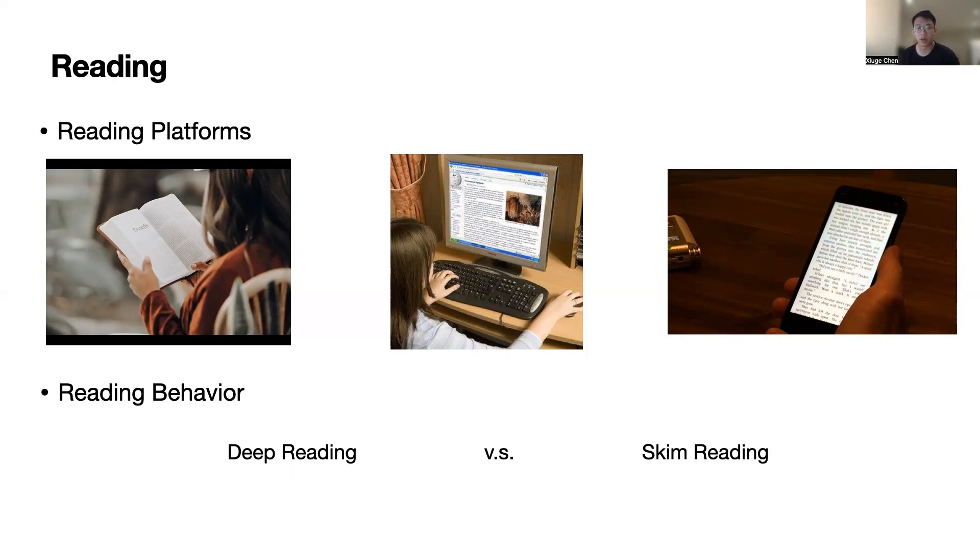They will also go deep into the text, trying to reconcile with the authors and understand implicit information that hasn't been made available on the text. Digital platforms might have helped people to read faster, but might also prevent people from reading deeper.